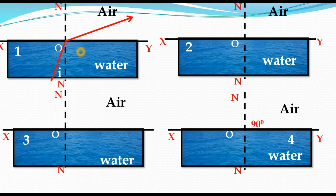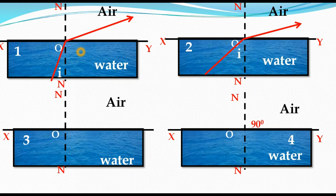Look at Figure 2. Same setup — water as denser medium, air as rarer medium, XY as interface. One ray travels through the water and is incident on the interface at O, entering into air. When a light ray travels from denser to rarer medium it bends away from the normal line. Comparing Figure 1 and Figure 2, the angle of incidence increases, and at the same time the angle of refraction also increases.